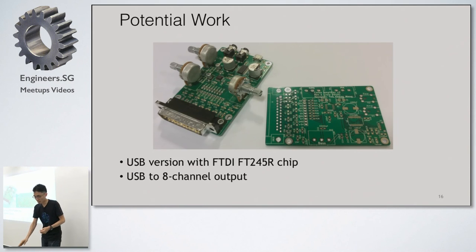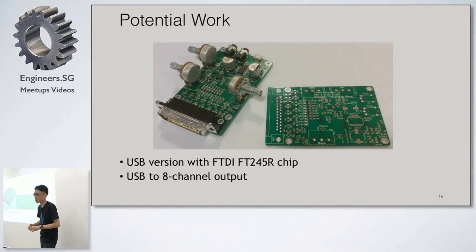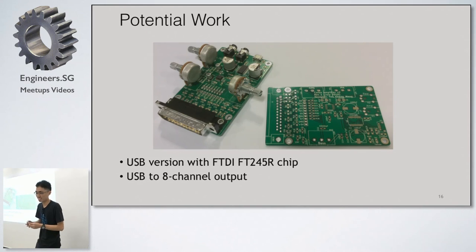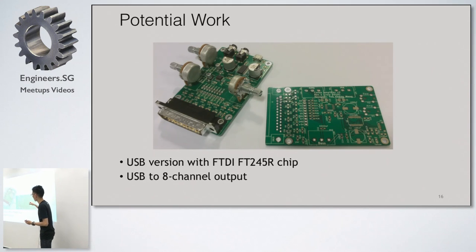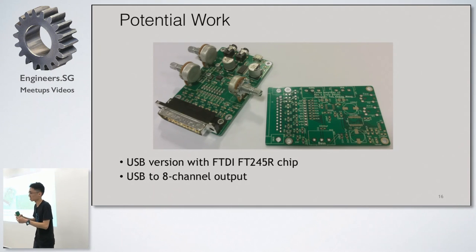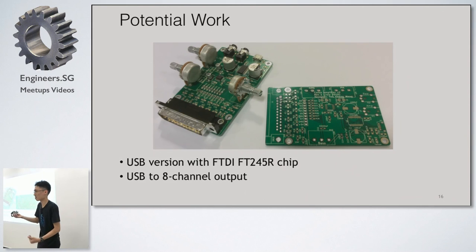For future work, I did create a USB version but didn't have time to test it. It uses the FTDI FT245R chip, which provides USB-to-8-channel parallel output, so technically it could work as a USB Covox sound card. The challenge is that the chip exposes itself as a serial port and the native serial port isn't fast or precise enough, so you need to use FTDI's own drivers and libraries to write to it consistently — which I didn't have time to implement. The project is open source if anyone wants to try.